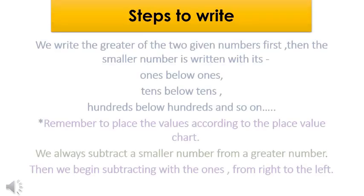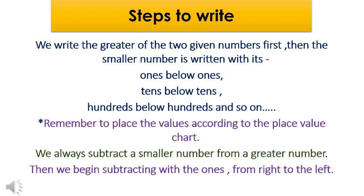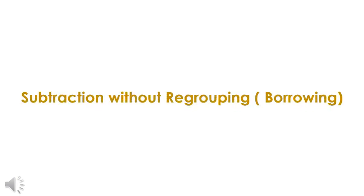Let us revise the steps to write subtraction. We write the greater of the two given numbers first, then the smaller number is written with its ones below ones, tens below tens, hundreds below hundreds, and so on. Remember to place values according to the place value chart. We always subtract a smaller number from a greater number, and we begin subtraction from the right to the left.